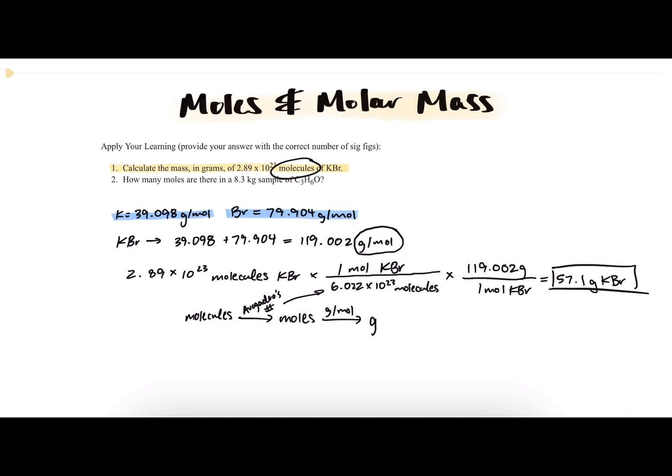Because later down in the line, we're going to need to do many conversions at once, and it'll be a lot faster if you can do them in succession, rather than doing one conversion, finding that value, taking that value, and doing another conversion with that. So it's just a lot easier to get used to doing them all at once. And when you do that, you will find that the answer is 57.1 grams.